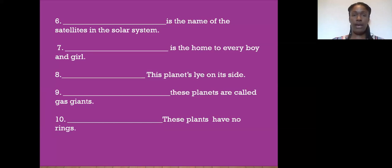Okay, everyone should be finished. Let's go over the answers. Number six, the name of the satellite in the solar system. Satellites are moons, is correct. Number seven, blank is the home for every boy and girl. Everyone should get this one right, Earth.